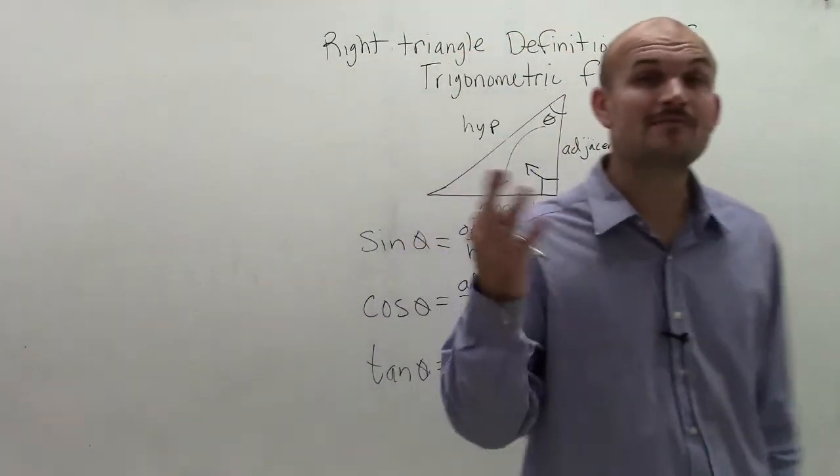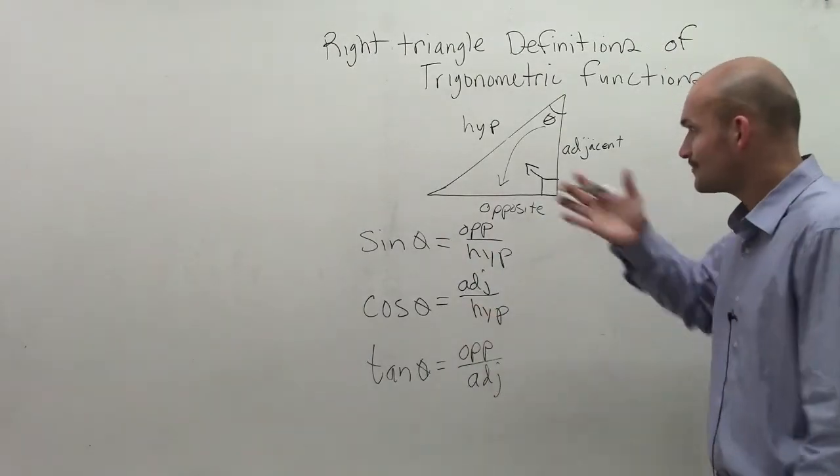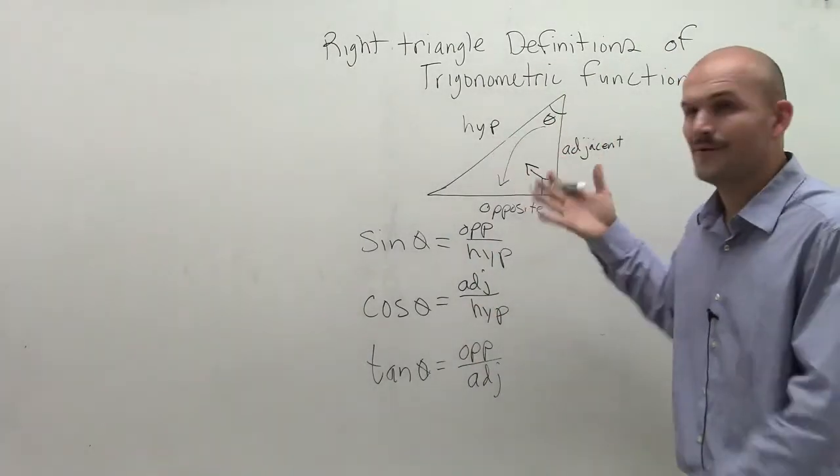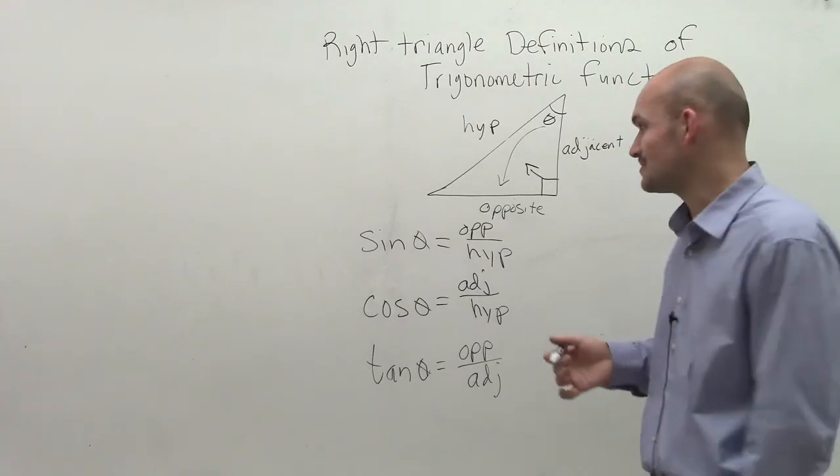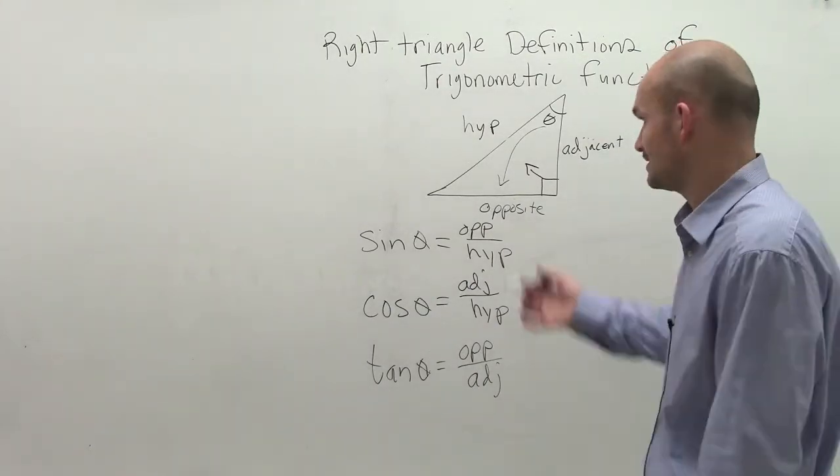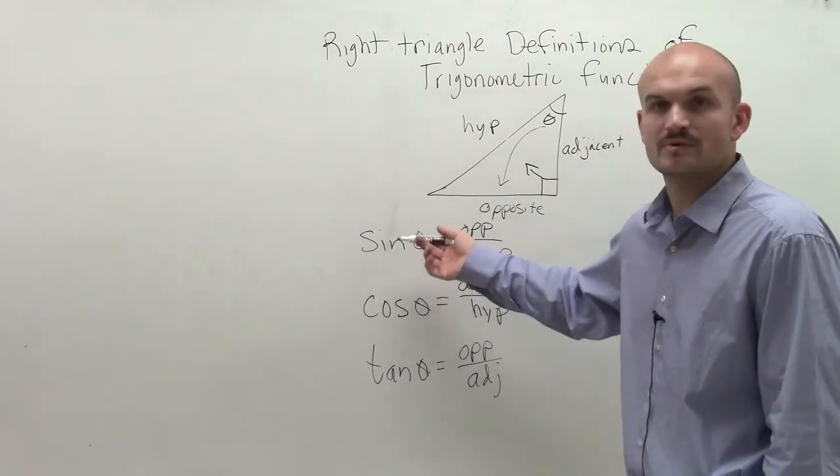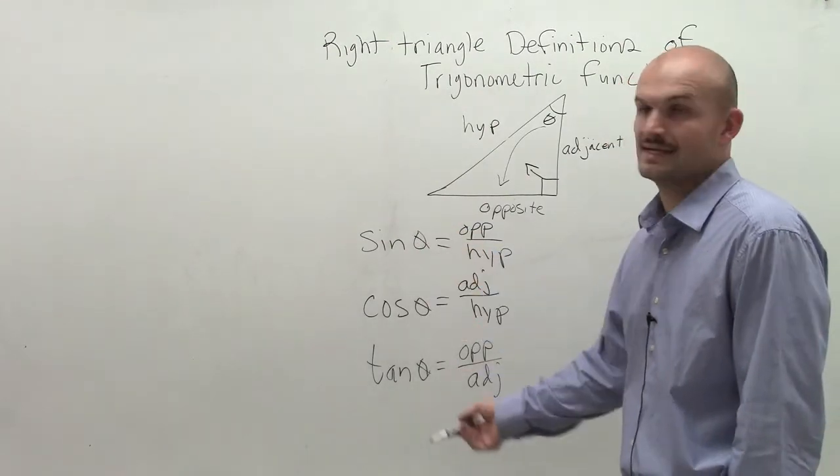So those are three of them, and we have three more. Now, we only have three sides, so what are the ways we can write ratios? Well, we also have what we call our reciprocal identities. And our reciprocal identities are going to be the reciprocals of sine, cosine, and tangent.